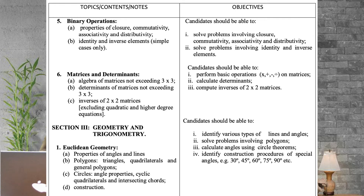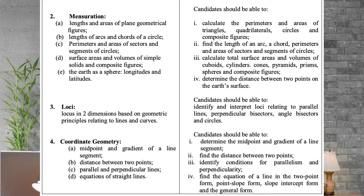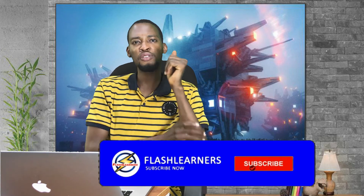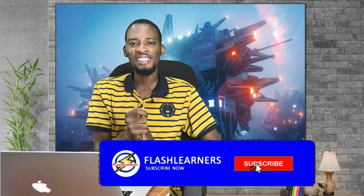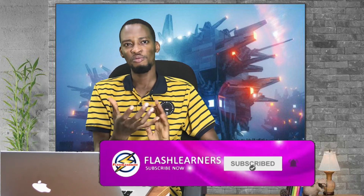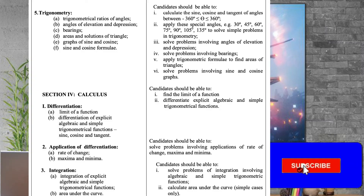The next section is Geometry and Trigonometry. You should know Euclidean geometry — angles, lines, polygons, circles, and construction. You should also know mensuration — lengths and areas of plane and geometrical figures, length of arcs, and so on. You should know loci, and coordinate geometry — distance, gradients, and midpoints. With the coordinate geometry formulas you are good to go; it's a very interesting topic.